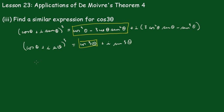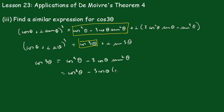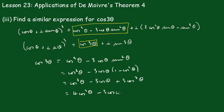So now we can say cos 3θ = cos³θ - 3cosθ sin²θ. We replace sin²θ with 1 - cos²θ, giving cos³θ - 3cosθ + 3cos³θ. This gives the result 4cos³θ - 3cosθ.